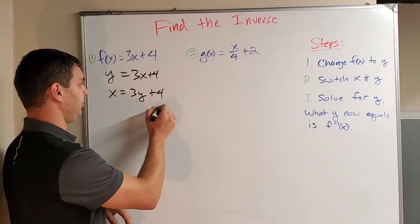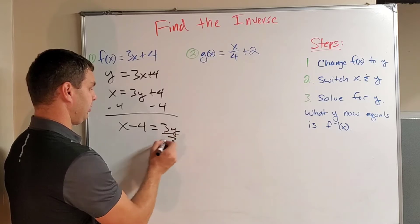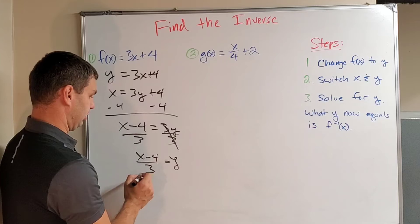And I have to solve for y. Subtract 4 on both sides. x minus 4 equals 3y. Divide by 3 on both sides. And y equals just x minus 4 all over 3.